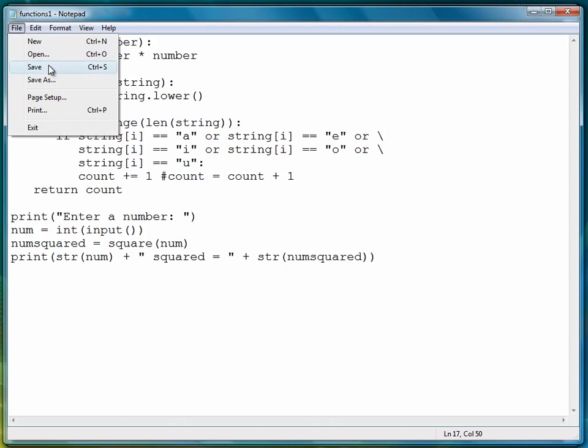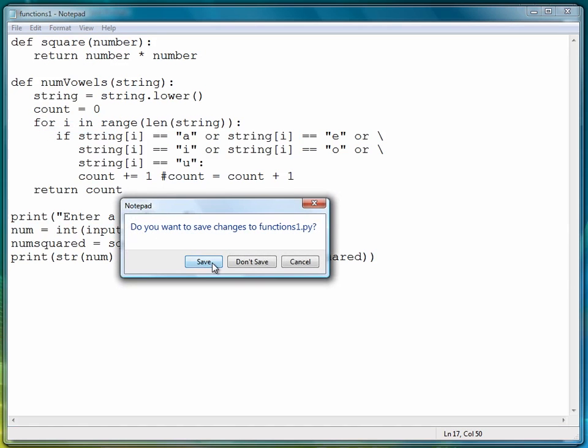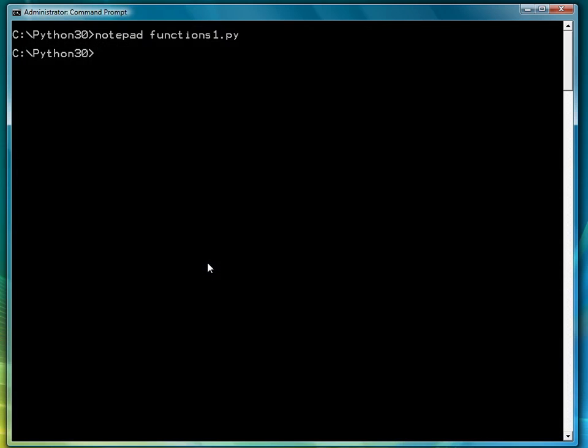So let's give it a try. Let's exit and save, and then call the program. We'll do a simple one, two squared. Two squared equals four. Let's run it again.